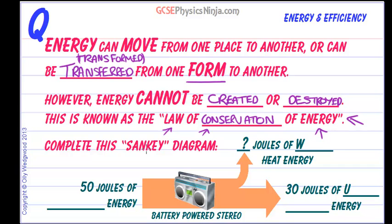So to illustrate this law, we use something called a Sankey energy flow diagram. And the thickness of the arrow gives us an indication of how much energy is flowing at a particular point.